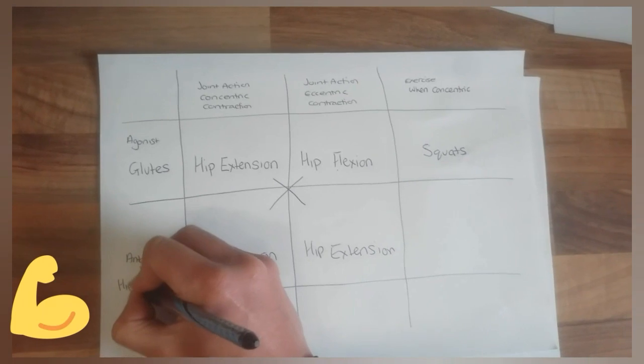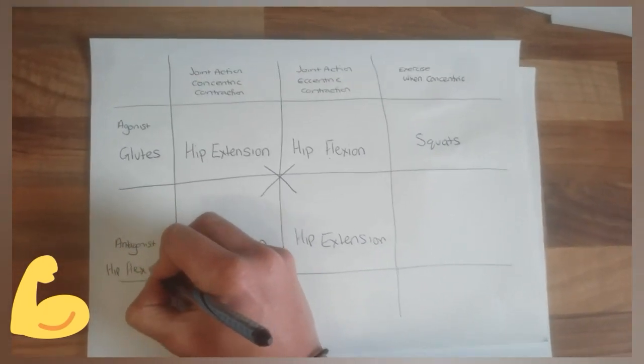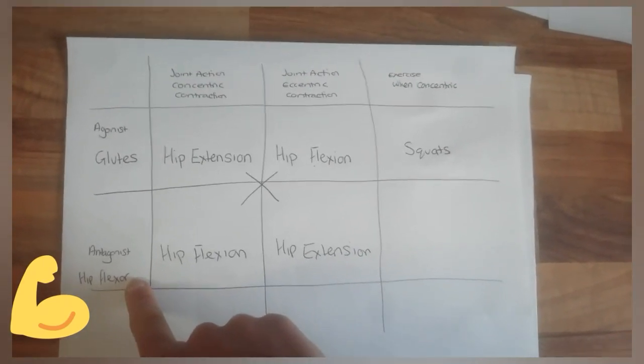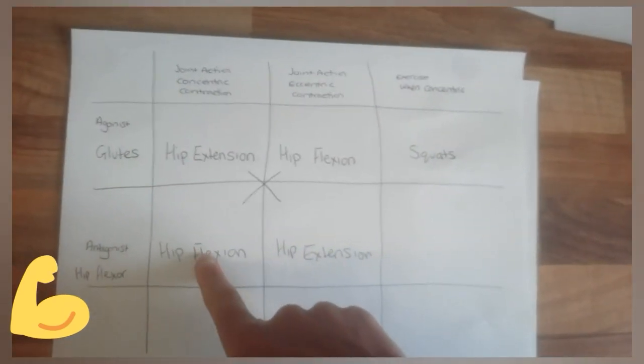The answer is going to be our hip flexors or our iliopsoas. So then that's the muscle that I'm going to use. Then I can go, okay, well, what exercise do I know that will create that hip flexion?